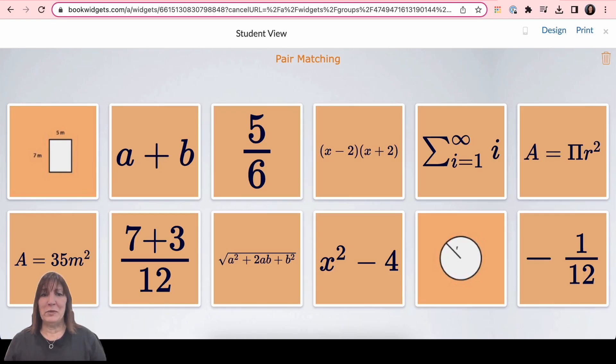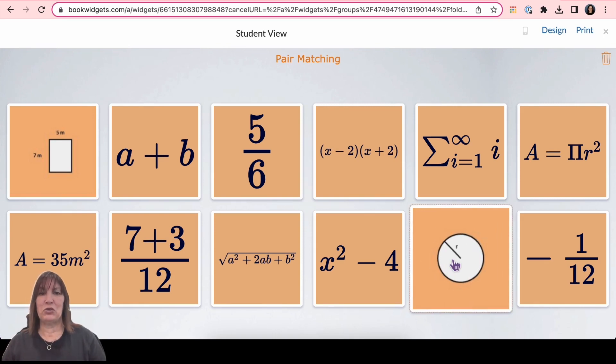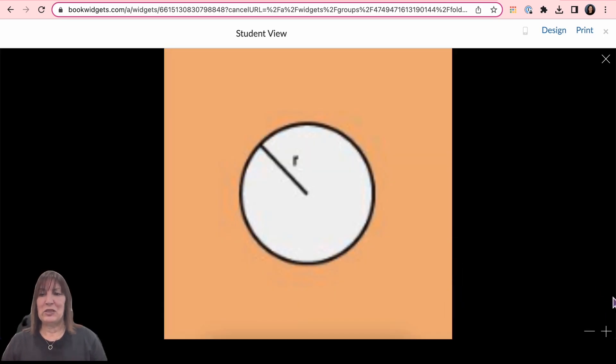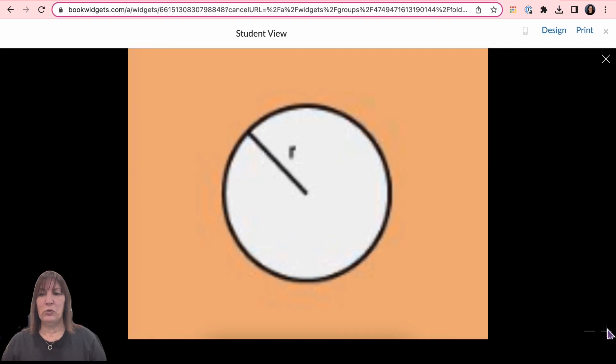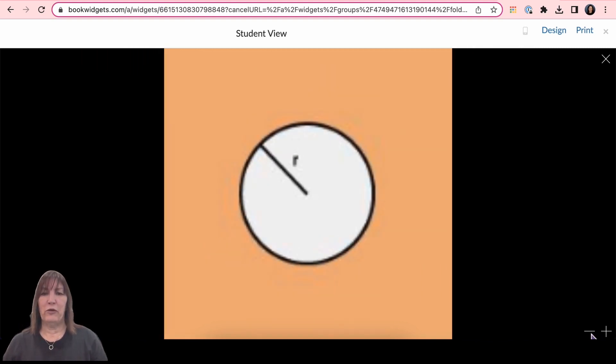Need to see a larger view of an image? Zoom images in and out in widgets by clicking on the image once or long press on a touch screen. Then use the plus and minus in the lower right to zoom in and out to get a better view of your image.